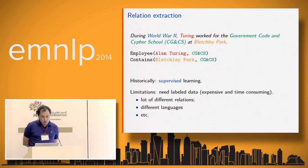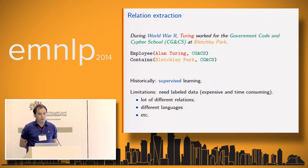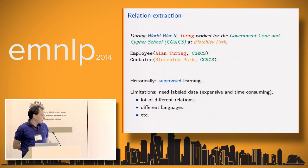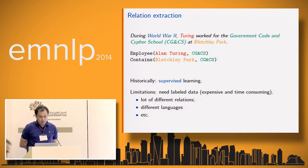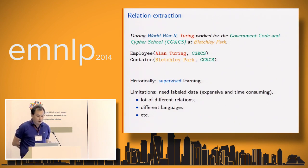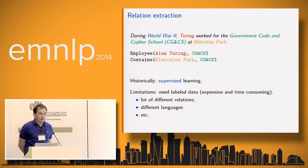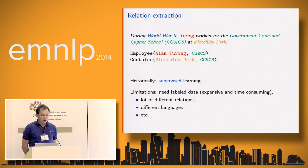Traditionally, the way to solve this problem is to use supervised learning, and one of the main limitations of this approach is that you need labeled data to train your extractor. The problem with relation extraction is that there are literally thousands of different relations, so it's very hard to have labeled data for all those kinds of relations in practice.